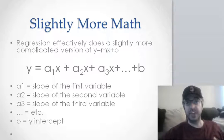So we have y equals a sub 1 times x plus a sub 2 times x plus a sub 3 times x plus etc, etc, etc, plus b. So you get finally the y-intercept.